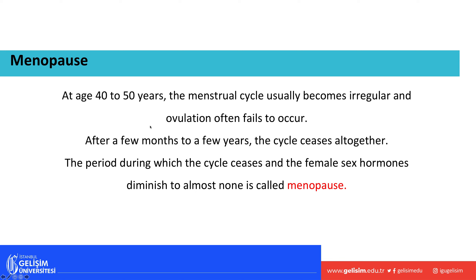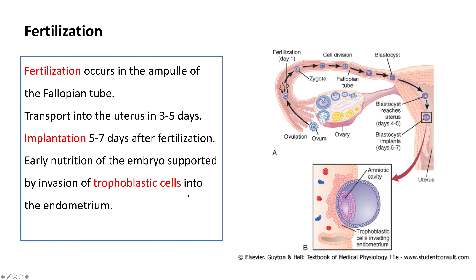Menopause occurs in women usually between ages 40 and 50, though it can occur earlier or later. The menstrual cycle starts becoming irregular and ovulation becomes inconsistent; eventually the cycle stops altogether. During menopause, the female sex hormones also start to decline. Fertilization takes place in the ampulla of the fallopian tube.